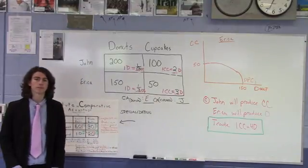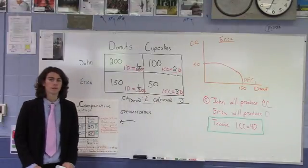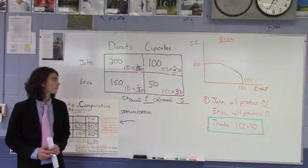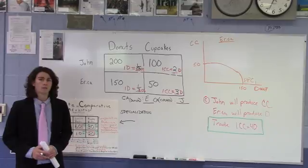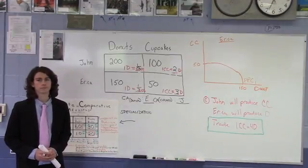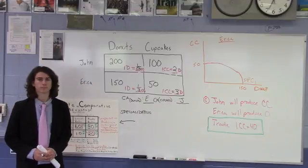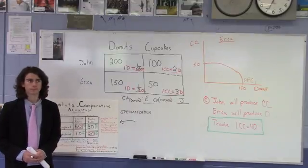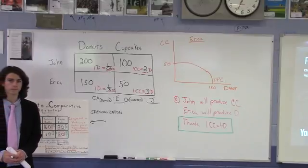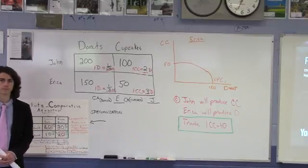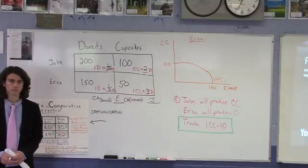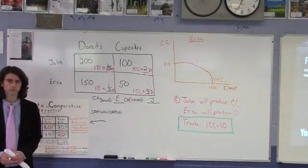Very good. And it leads us to this short question, only one more part. Part D. Assume that Erica discovers a new cupcake production technique that will increase her daily production of cupcakes only, using donuts on the horizontal axis, and draw a correctly labeled production possibility curve for Erica, before and after the technology change in cupcake production.